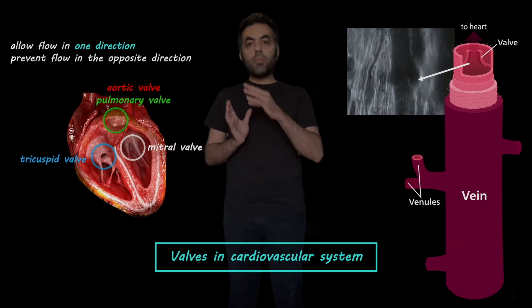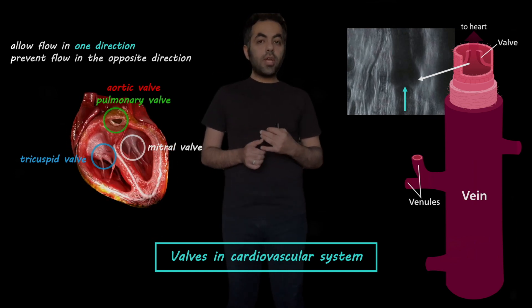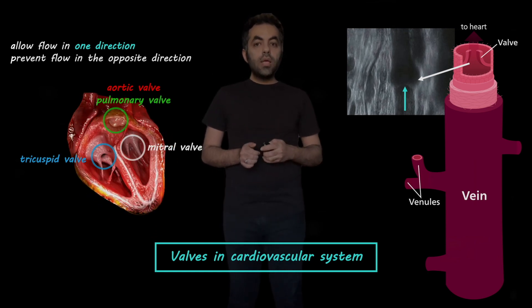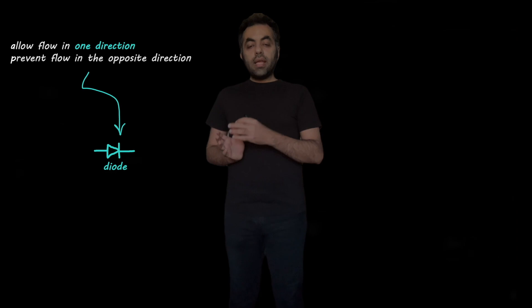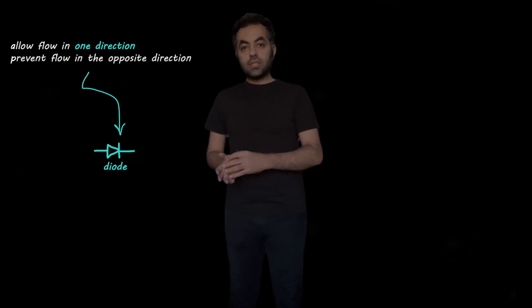So how can we model this behavior of valves using a zero-dimensional element? We know that in electrical circuits, diodes only allow electrical current in one direction and prevent it in the opposite direction. So we can use diodes for that.